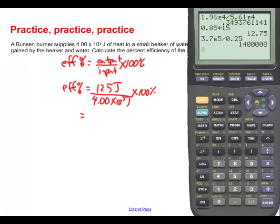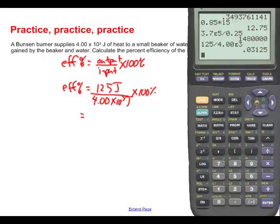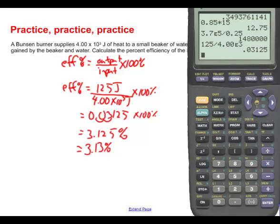What do you get if you take 125 joules and you divide it by 4.00 second function EE third power? What do you get for that? You get 0.03125, still multiplied by 100%. Well, multiplying by 100% is a snap. All we've got to do is take the decimal point and go 1, 2. So it's 3.125%. And then lastly, how many significant digits are we allowed to have? Looks like we're going to have to have only 3. So I will therefore say the answer is 3.13% to three significant digits.